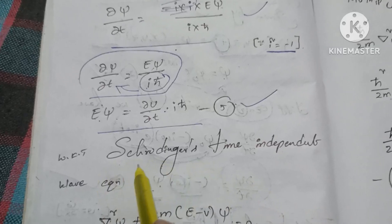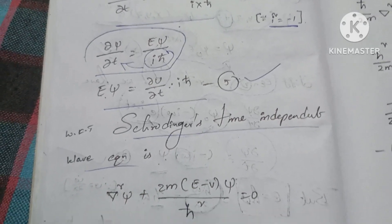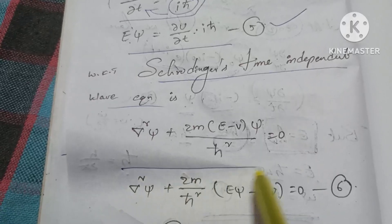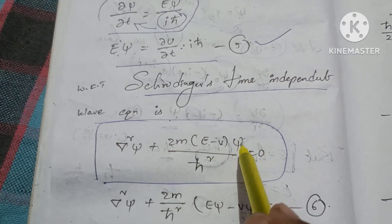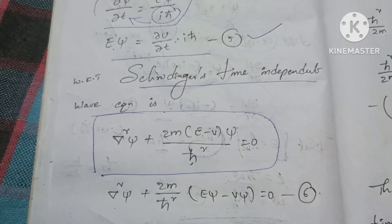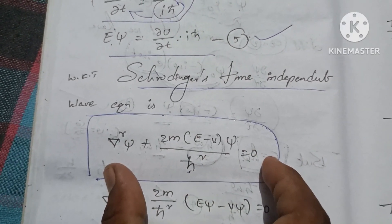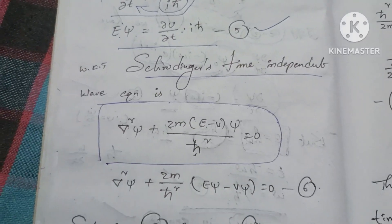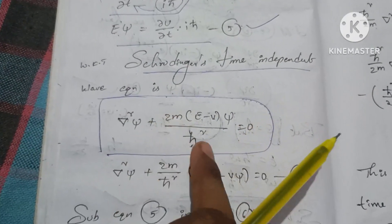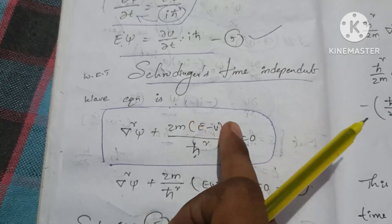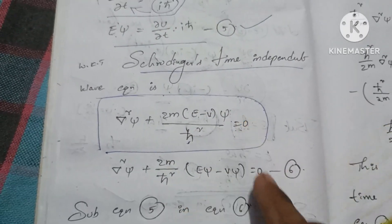From the previous result, we know that: ∇²ψ + (2m/ħ²)(E − V)ψ = 0. Expanding: ∇²ψ + (2m/ħ²)·E·ψ − (2m/ħ²)·V·ψ = 0. This is equation 6.